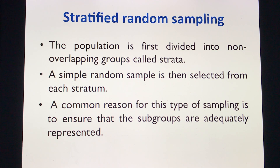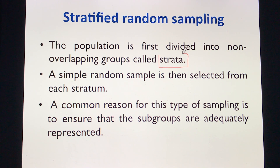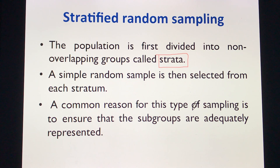In stratified random sampling, the population is first divided into non-overlapping groups called strata. A simple random sample is then selected from each stratum. A common reason for this type of sampling is to ensure that the subgroups are adequately represented.